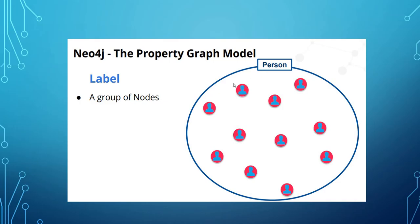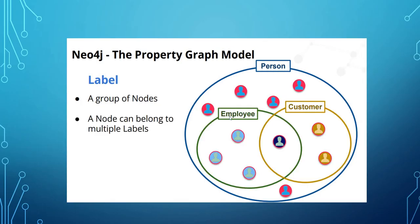A group of nodes can be labeled with a single label — for example, all nodes labeled as 'Person'. It is not mandatory that a node can have only one label; a node can have multiple labels. For example, some nodes have two labels: 'Person' and 'Employee'. Others have 'Customer' and 'Person'. And some nodes can have three labels: 'Customer', 'Employee', and 'Person'.